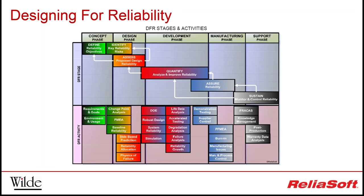Once the design moves on to more advanced stages of specific development, tests can be performed to gain confidence in the life that can be expected from the system. With the design finalised, it is important to ensure that the manufacturing and assembly process does not detriment performance. Reliability can be maximised using burn-in processes and implementing process controls. Throughout the entire life of a product, it is important that findings are fed back upstream so that problems can be rectified and future reliability improved.